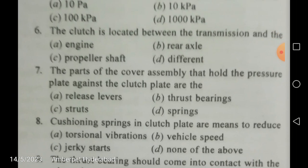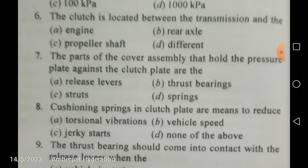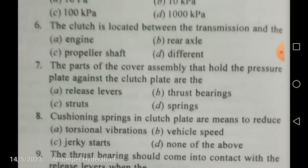The clutch is located between the transmission and engine. Options include engine, rear axle, propeller shaft, or differential. The gearbox and differential are connected through a propeller shaft with universal joints — one on the gearbox side and one on the differential side. The correct answer is A — engine. The clutch connects on the engine side.